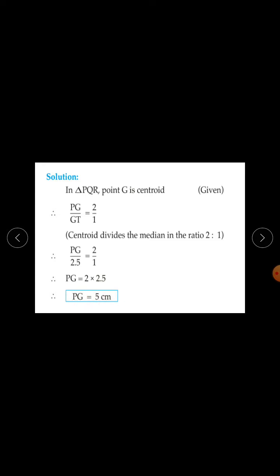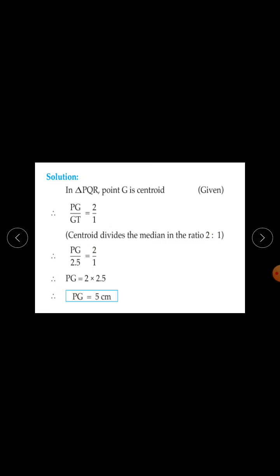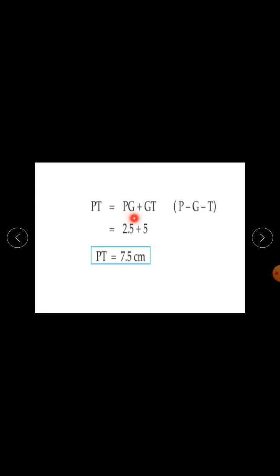Next, PT equals PG plus GT. Substituting PG equals 5 centimetres and GT equals 2.5 centimetres, PT equals 5 plus 2.5, therefore PT equals 7.5 centimetres.